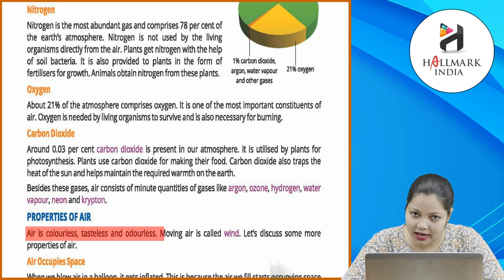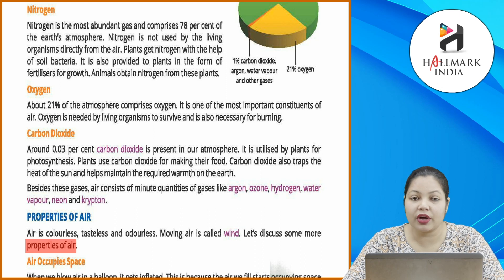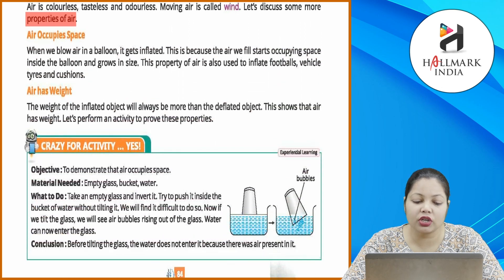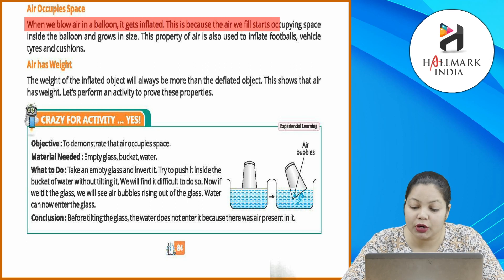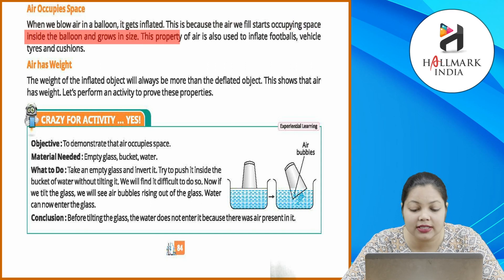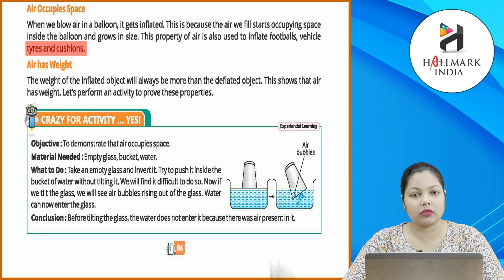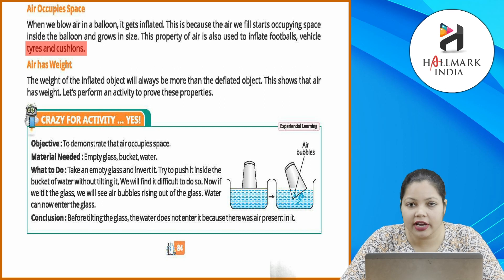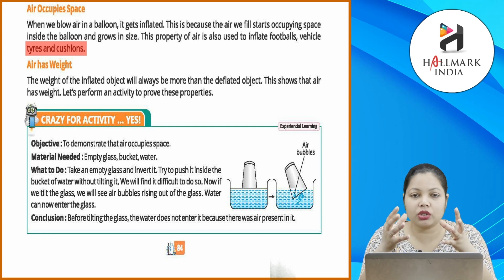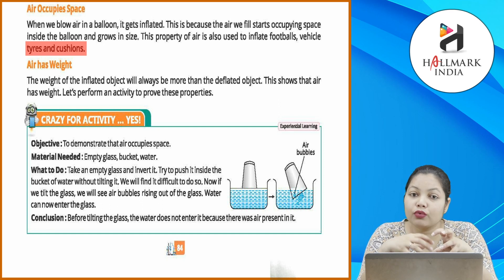Properties of air: air is colorless, tasteless and odorless. Moving air is called wind. Air occupies space — when we blow air in a balloon, it gets inflated because the air fills and occupies space inside the balloon, growing it in size. This property of air is also used to inflate footballs, vehicle tires and cushions. Balloon mein agar aap air fill karenge, to wo balloon ka shape aur size change karta jaega — round hota jaega aur bada hota jaega. Air ka use kiya jaata hai tires, balloons aur cushions fill karne ke liye.